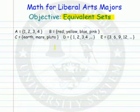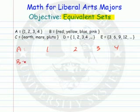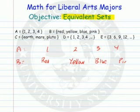So let's look at two sets. Let's take A and B. Set A has in it 1, 2, 3, and 4. Set B has in it red, yellow, blue, and pink.